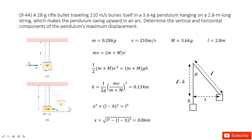How much did it move up? H. So it becomes (small m plus capital M) times G times H. The problem asks us to determine the vertical and horizontal components of the pendulum's maximum displacement.